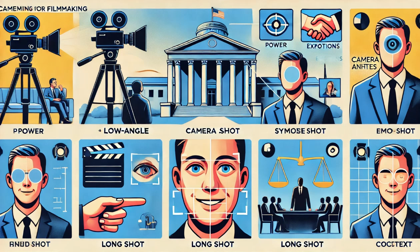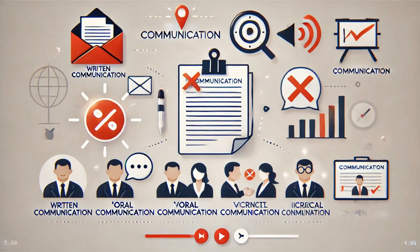A long shot is a camera shot — not a camera angle. A long shot shows the subject's entire body and some of their surroundings, often used to establish the scene or setting. It shows your face to your feet plus some surroundings like your chair. For example, a shot of a character standing in front of a courthouse, showing the building's grandeur and the character's place within it.